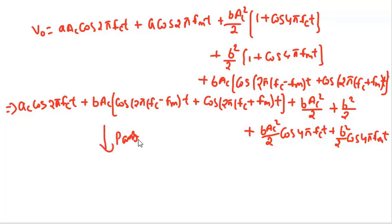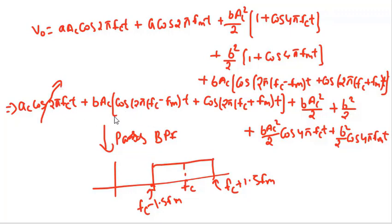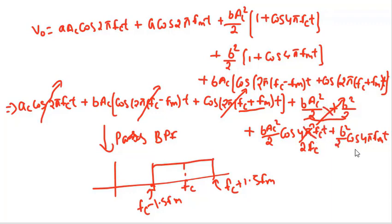This v0(t) passes through the band pass filter with center frequency fc, upper band at fc plus 1.5fm and lower band at fc minus 1.5fm. The first term at frequency fc will pass. The terms b·Ac·Am·cos(2π(fc−fm)t) and b·Ac·Am·cos(2π(fc+fm)t) also lie within the band and will pass. The DC terms are out of band and will not pass. The term at 2fc and the term at 2fm will also not pass through the filter.